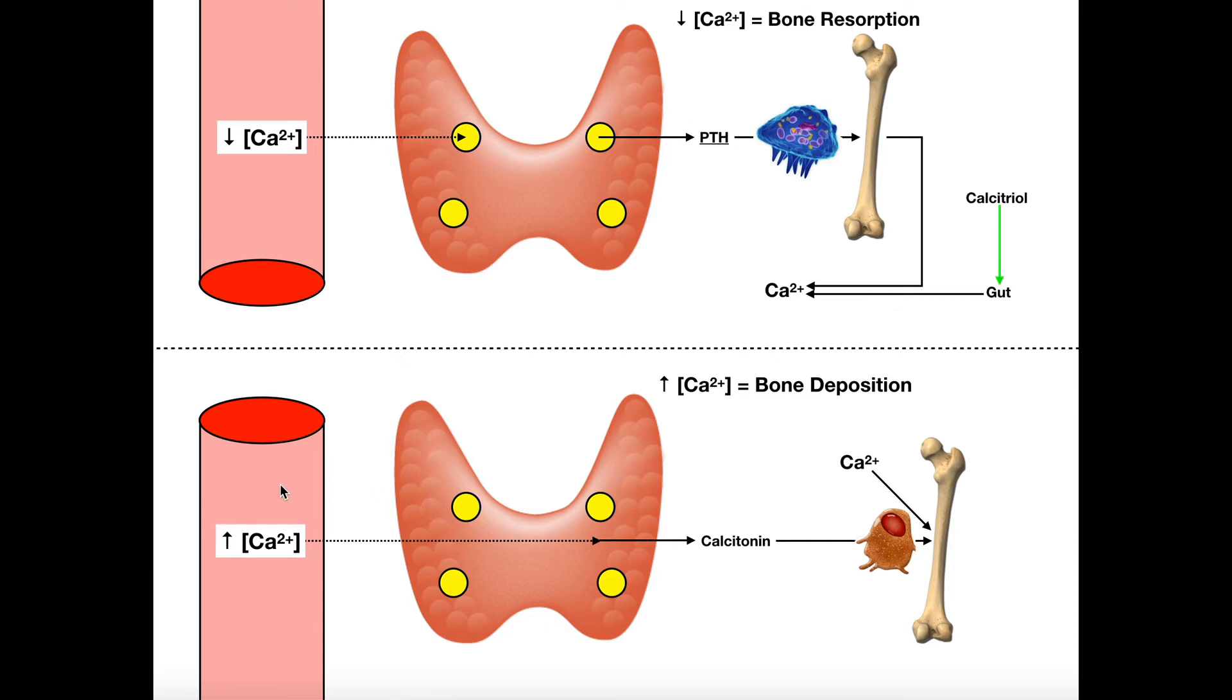Now, what about the opposite case? What if we have high blood calcium levels? We also don't want them getting too high. So in contrast, high calcium levels in the blood will stimulate bone deposition. So we're going to deposit that calcium into the bone because it's going to act as a storage reservoir for the calcium. Now, high levels of calcium inhibit release of PTH from the parathyroid gland. So it's only released when it's low. When it's high, these parathyroids don't do anything.